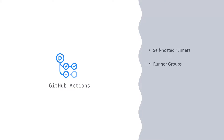If you have a lot of self-hosted runners, you're going to want a way to organize them, especially for providing access control to specific repos or workflows. Enter Runner Groups. Let's look at how you can use Runner Groups to organize your self-hosted runners.